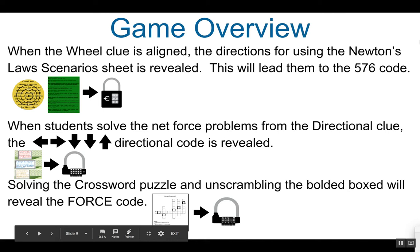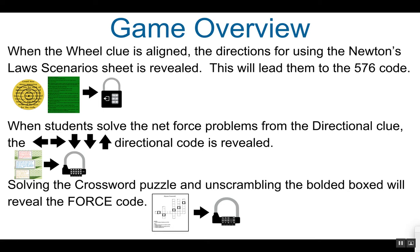When the wheel clue is aligned, the directions for using the Newton's Law Scenario sheet are revealed. When they have completed it, this will lead them to the code 576 for the three-digit lock. When students solve the directional clue, which is full of net force problems, they will have the directions for the directional code — left, right, down, down, up — which is the code for the directional multi-lock. Solving the crossword puzzle and unscrambling the bolded boxes will reveal the word 'force,' which is the code for the ABC multi-lock.